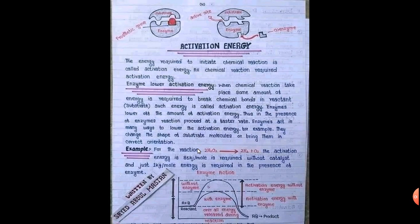Activation energy is the minimum amount of energy that a reaction requires for it to progress. For a particular substrate to be converted to a product — for example, hydrogen peroxide breaking down to hydrogen gas and oxygen gas — there is an amount of energy required to break the bonds in hydrogen peroxide. That minimum amount of energy required for the breakage of those bonds is what we call activation energy.